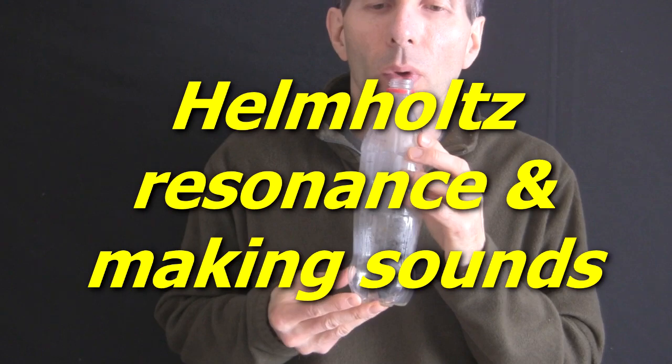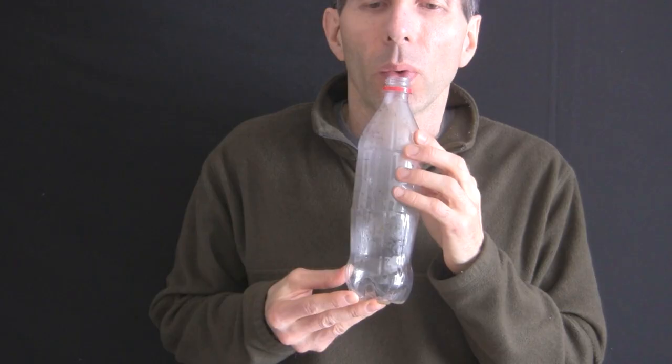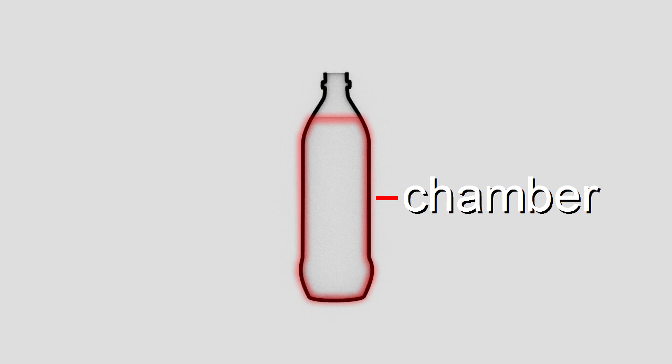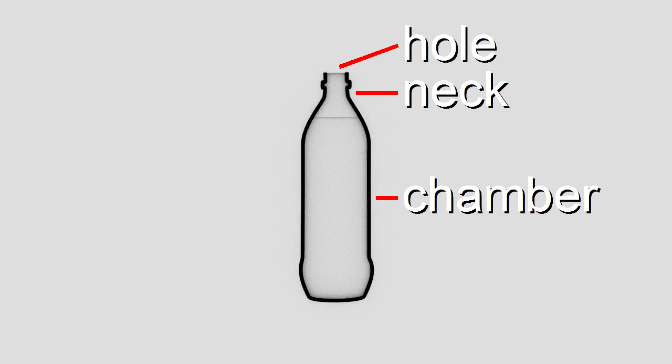First, Helmholtz resonance and making sounds by blowing in bottles. The bottle has to meet some minimum requirements. It has to have a large volume called the chamber, as well as a narrower volume called the neck and a hole at this end of the neck.